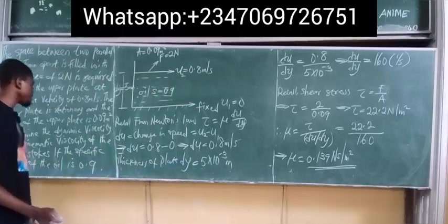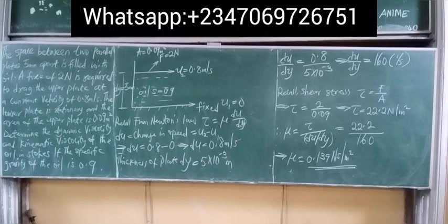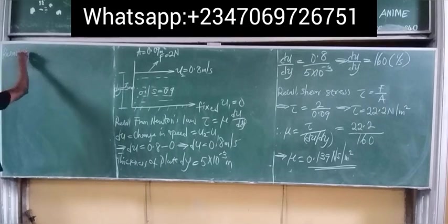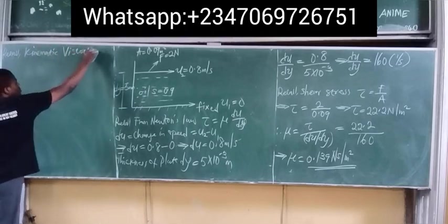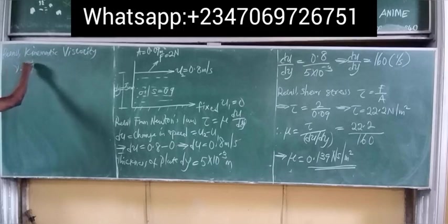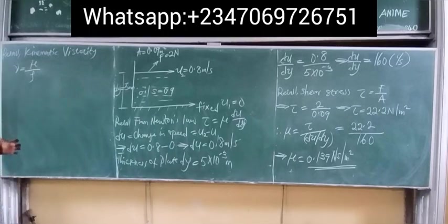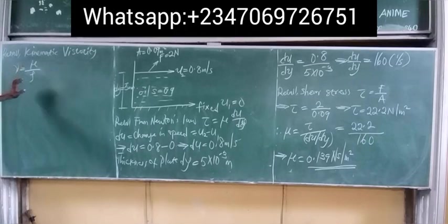Next, we need to find the kinematic viscosity in stokes. Recall that kinematic viscosity nu is defined as dynamic viscosity divided by density. I'll post the link to the introduction video in the description. We know the dynamic viscosity but we don't know the density, so we need to obtain it.